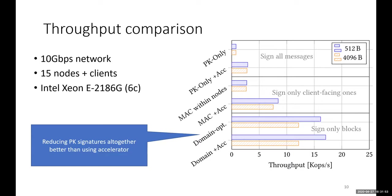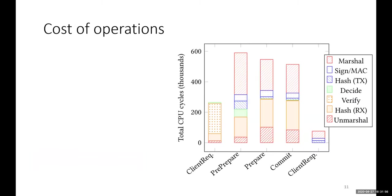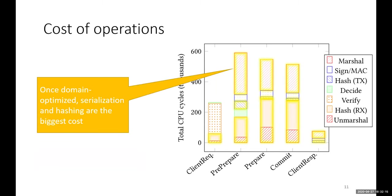If you look at the cost of operations within the leader node using domain-optimized with the cryptographic accelerator, when you break down how many clock cycles are spent in different types of operations, something like 75 percent of clock cycles are spent on serialization and hashing. This is maybe not that surprising—if you remove cryptographic operations, what remains is mostly parsing packets and hashing. But one wouldn't expect it to this extent, that it takes three-quarters of the runtime just in these operations.